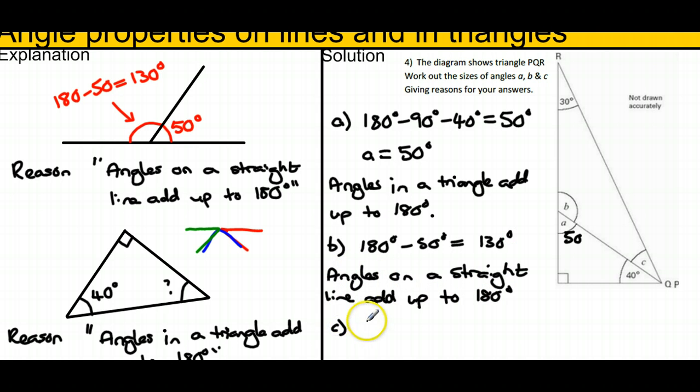Now c is in the triangle with 30 and the 130 that we worked out for b. If we take those both away from 180, we're left with 20. So c is 20, and again the reason for this is 'angles in a triangle add up to 180.'